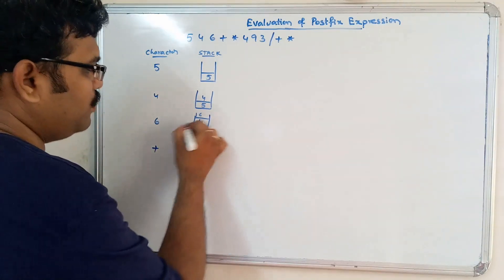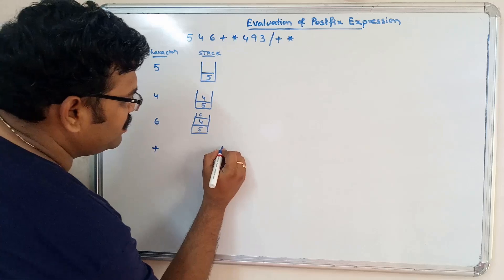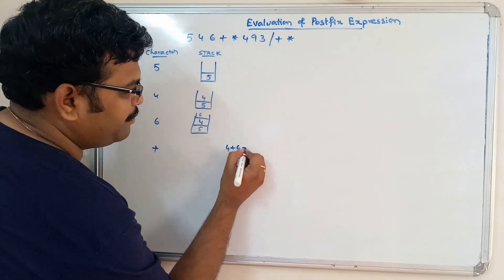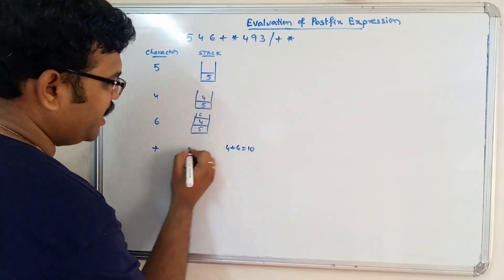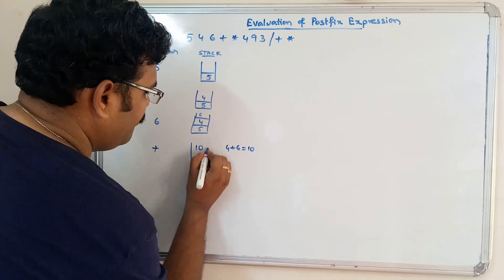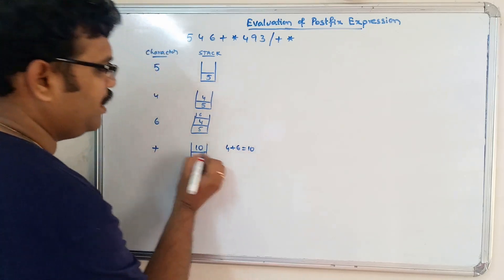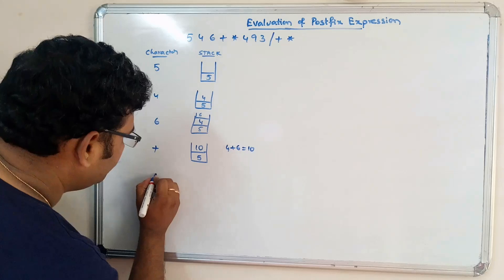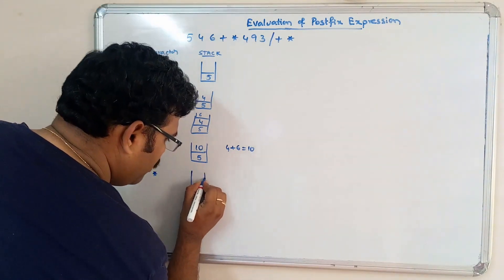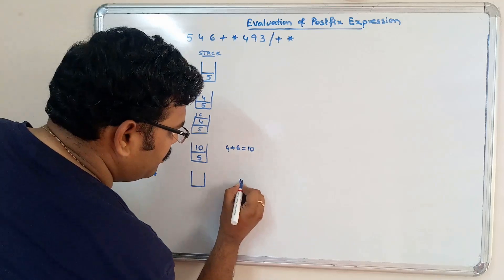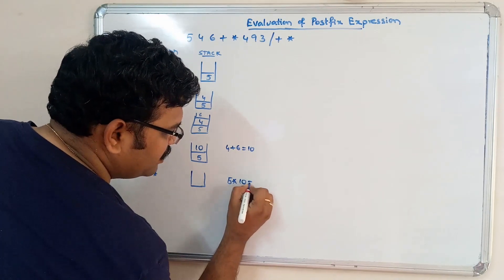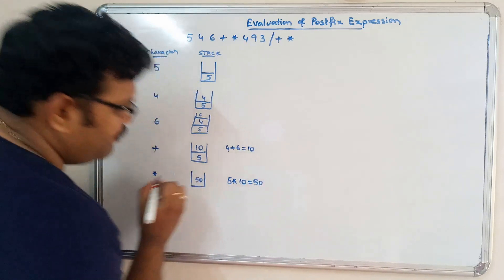Next is star. Pop 10 and 5, apply 5 × 10 = 50, push 50. Stack: 50. Next read 4, push; read 9, push; read 3, push. Stack: 50, 4, 9, 3. Now division: pop 3 and 9, place 9 on left: 9 ÷ 3 = 3, push 3. Stack: 50, 4, 3.